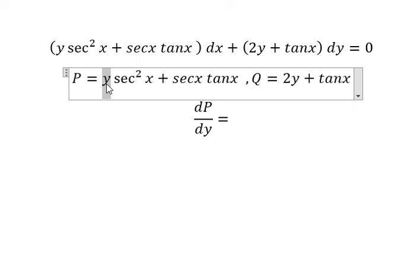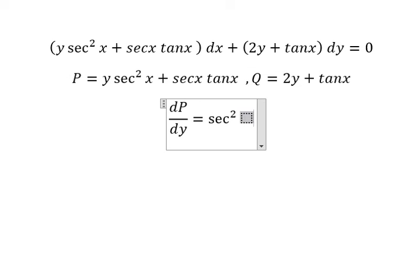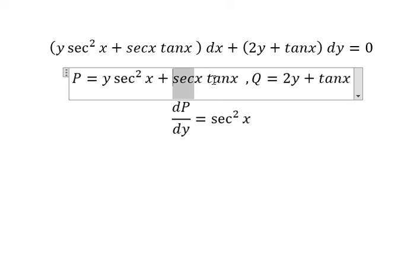The partial differential of y we have 1 and we have secant squared x. This one we don't have y so we get 0.